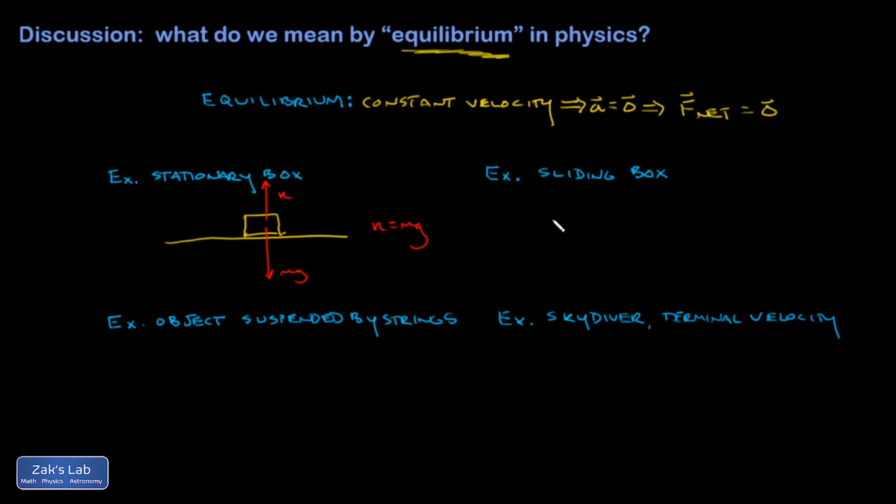I could also have a box sliding at a constant speed. That's another type of equilibrium problem. So you could accomplish this by having an applied force off to the right. Just trying to show a case where this typically would come up as a problem. And maybe the kinetic friction force exactly balances it.